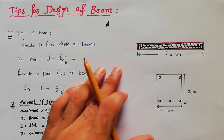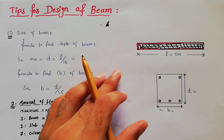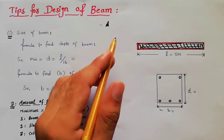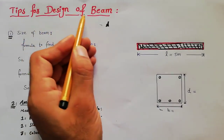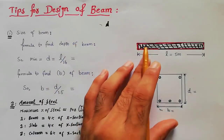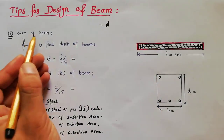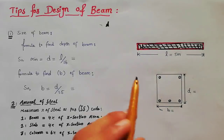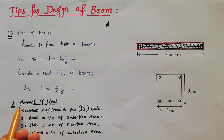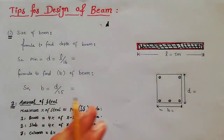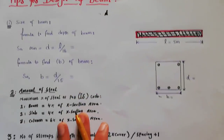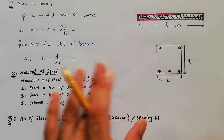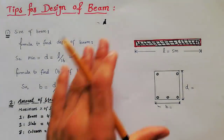Assalamualaikum friends, welcome back to Civil Engineers YouTube channel. In this video lecture we are going to discuss tips for design of RCC beam. You will learn how to find size of beam — depth and breadth — also the amount of steel for different RCC structures, and third, the number of stirrups in a beam.